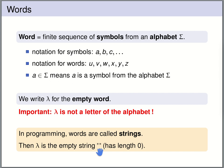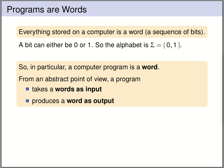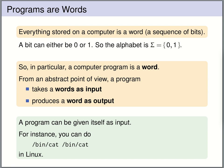Lambda has length zero. Everything that is stored on a computer can be thought of as a word — it is a sequence of bits, of zeros and ones. In particular, a program can be thought of as a word. From an abstract point of view, a program takes as input a word and produces as output a word. Since programs are words and input and output can be thought of as words, we can give a program to itself as input. In Linux, for instance, we can call the program cat and give as argument the program cat itself, and this program will print its own code.